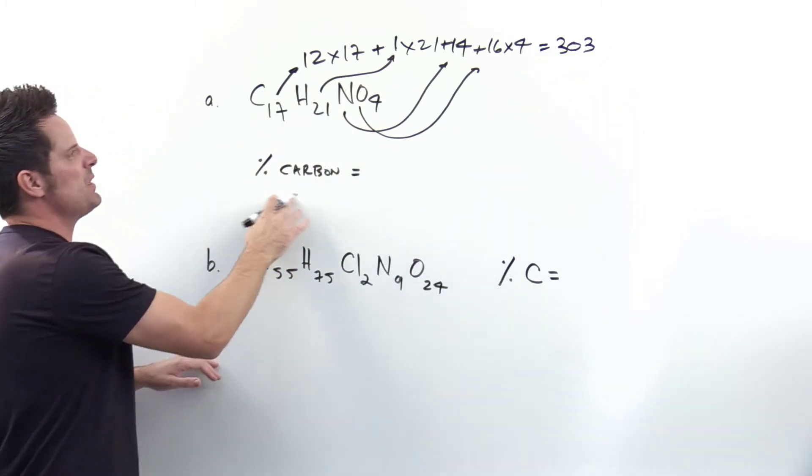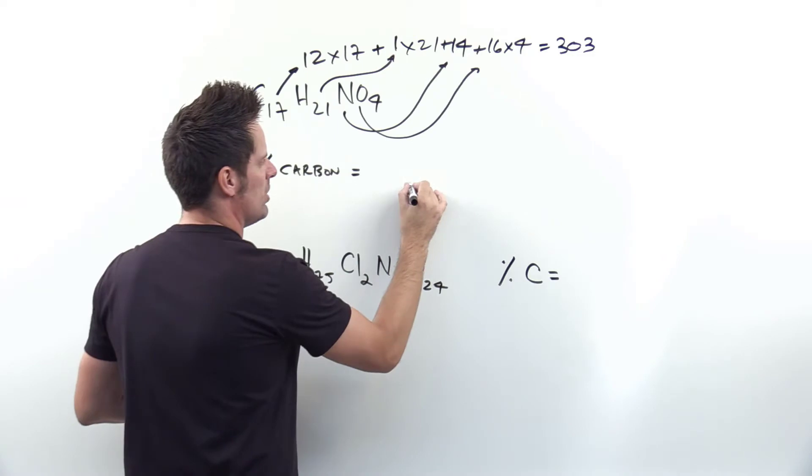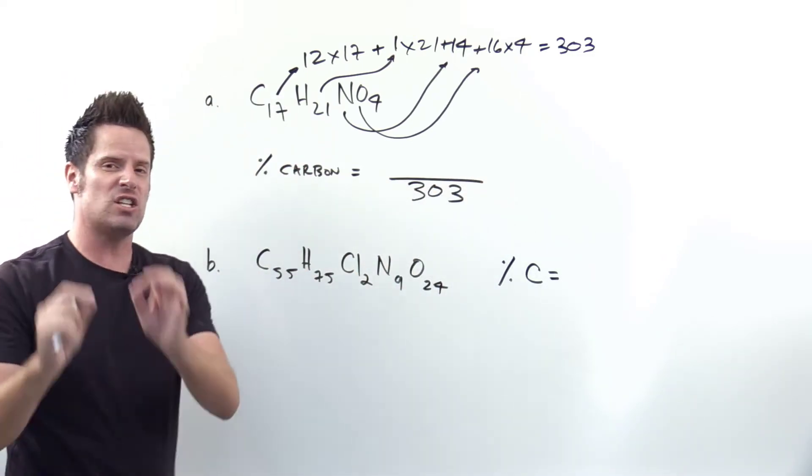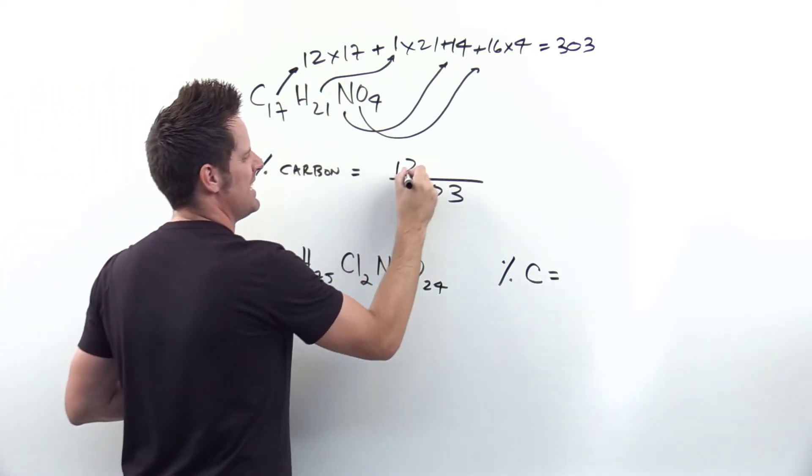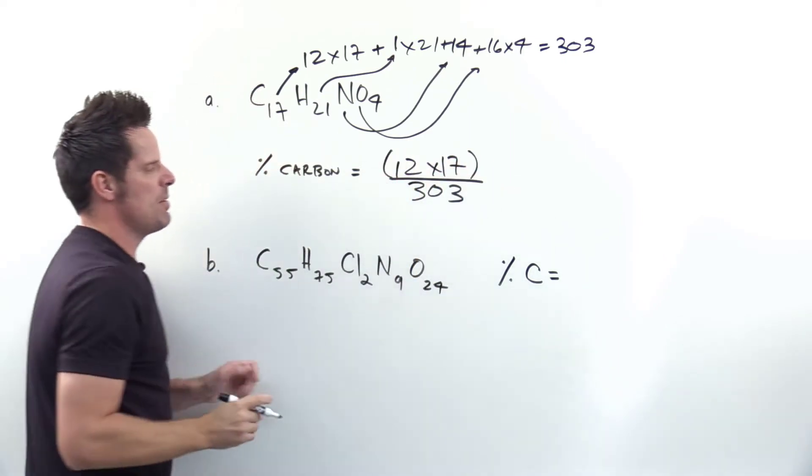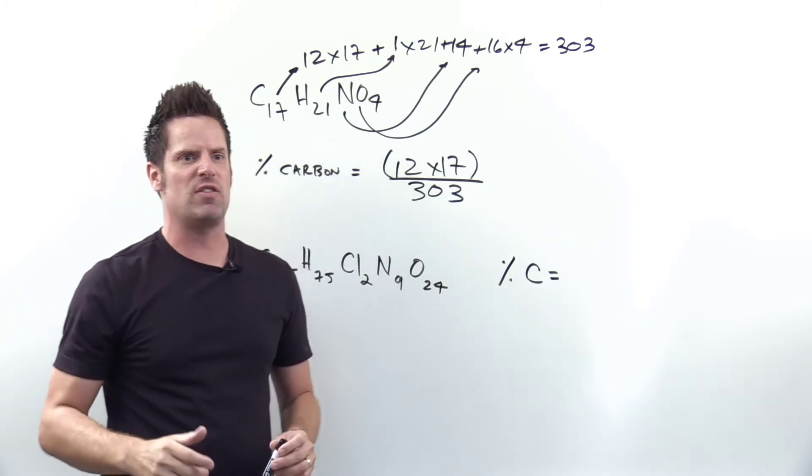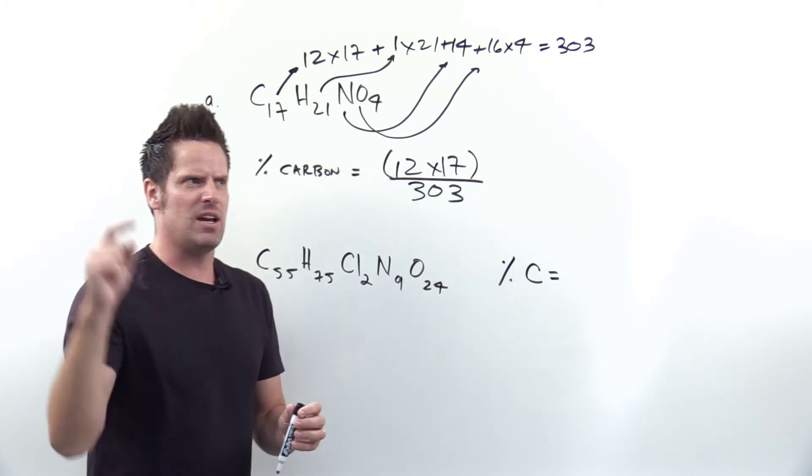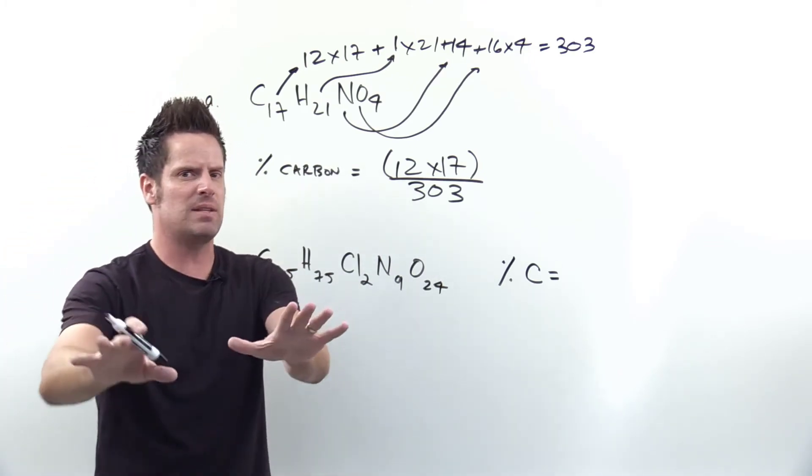Okay so what percent of that 303 is just carbon? Well the total mass of everything in this molecule including the carbon is 303. The mass of just the carbon by itself is 12 times 17. Okay so I put 12 times 17 in the numerator. Now remember we want to get this in a percent though. So this is kind of like a grade on a quiz or a test. If you got 57 out of 70 on a test what percent would that be? We take your 57, put it in the numerator, divide it by 70 and then times by 100. Same thing here.